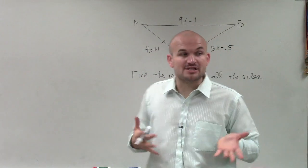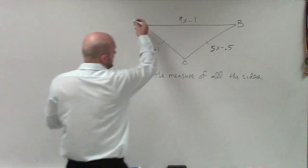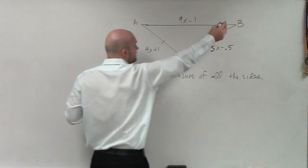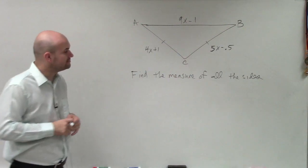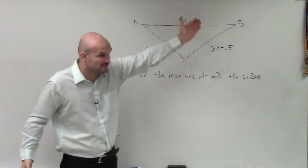Now, they want us to find the value of each and every side. So we need to find the value of AB, AC, and BC for the measurements. So to do that, we need to find the value of x.